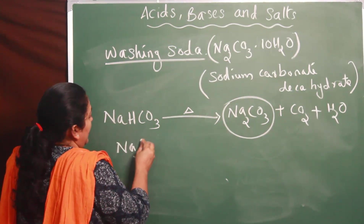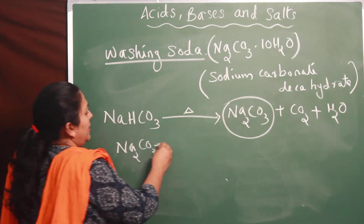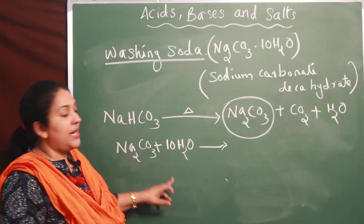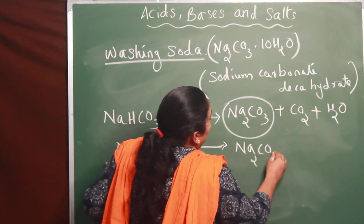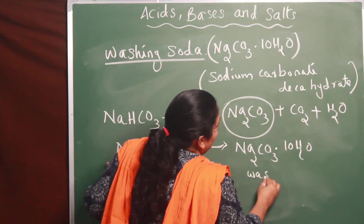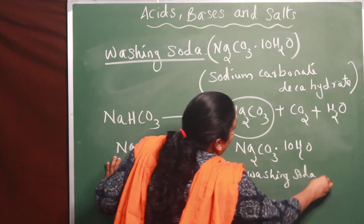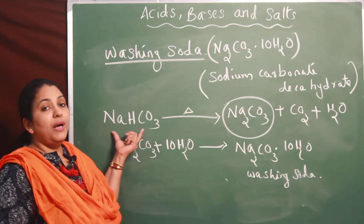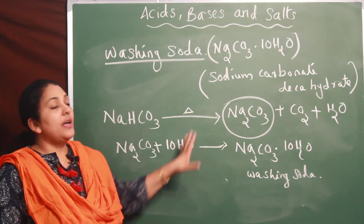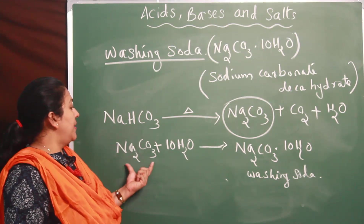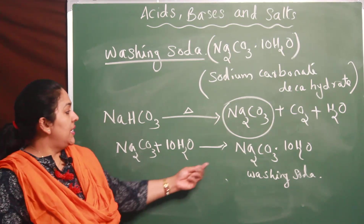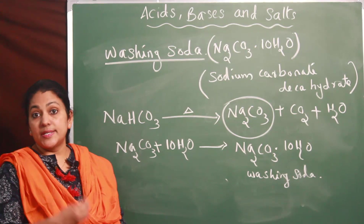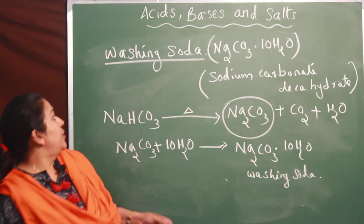The sodium carbonate, when kept open, will absorb 10 water molecules - this is called recrystallization. It will become Na2CO3·10H2O, which is washing soda. So the method of preparation of washing soda: when baking soda is heated, you get sodium carbonate, carbon dioxide, and water. Then when sodium carbonate absorbs 10H2O molecules it becomes washing soda, or sodium carbonate decahydrate.